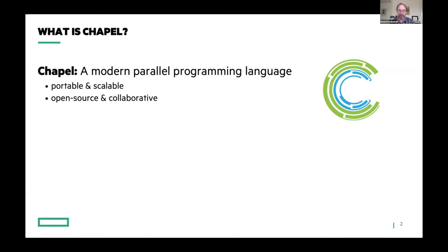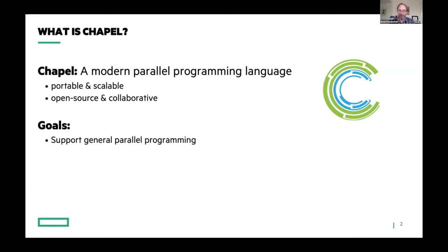Chapel is an open source project. It's developed at GitHub, and it's collaborative. We collaborate under the Apache 2.0 license, which is a fairly permissive license. At the highest level, you can think of Chapel as having two main goals. The first one is to support general parallel programming — if you have any parallel algorithm you'd like to implement on some parallel hardware, you ought to be able to do that in Chapel, and if not, we're failing at this goal.